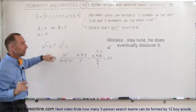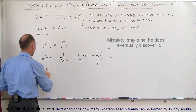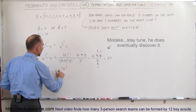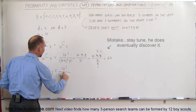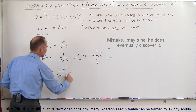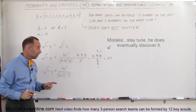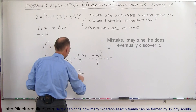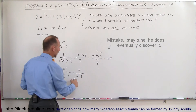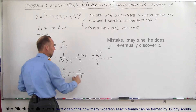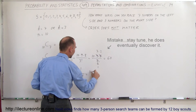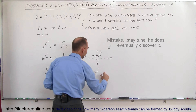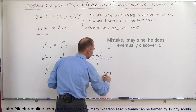Now let's verify by doing it the other way. The number of combinations C(10,3) equals 10 factorial divided by (10 minus 3) factorial times 3 factorial in the denominator. Notice this equals 10 factorial divided by 7 factorial times 3 factorial. Again, 10 factorial divided by 7 factorial equals 10 times 9 times 8, divided by 3 factorial, which equals 10 times 9 times 8 divided by 6.